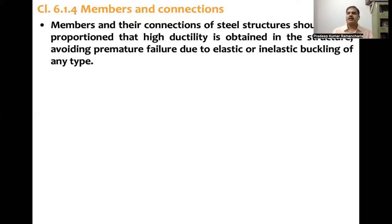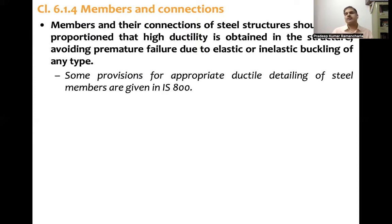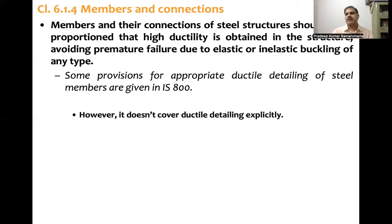For steel members and connections of steel structures, they should be proportioned to obtain high ductility, avoiding premature failure due to elastic or inelastic buckling of any type. Inelastic buckling is a secondary type of buckling, and this is addressed using provisions of IS-800. However, IS-800 does not explicitly have comprehensive ductility provisions, and it is hoped that BIS will soon release a ductile detailing code for steel structures, similar to IS-13920 for RC structures.